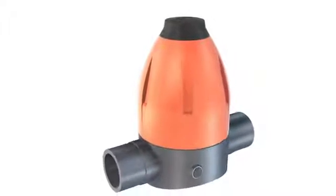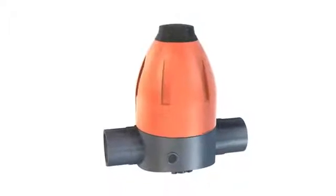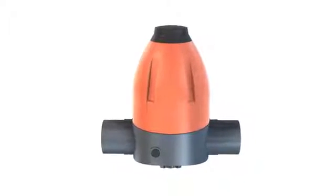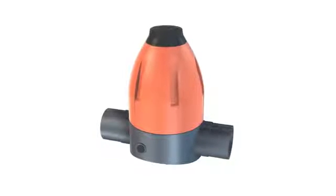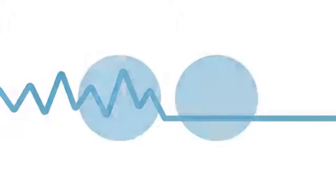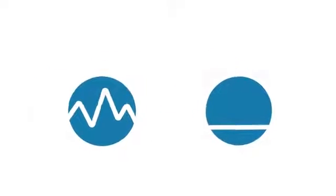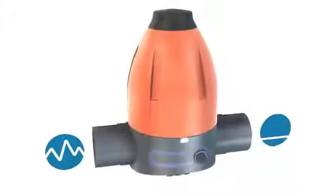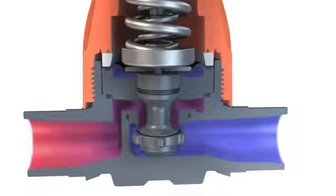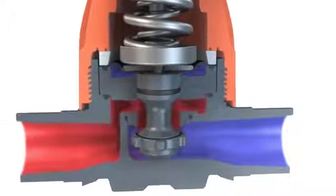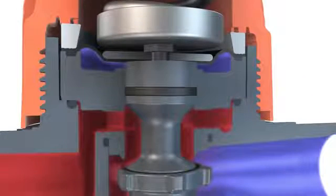GF piping systems' new pressure regulating valves provide maximum performance thanks to their compact and modular design. Pressure reduction is simplified by the type 582 reducing valve. If the output pressure exceeds the set pressure, the medium is diverted over